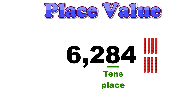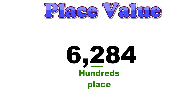In the hundreds place, we see that there is a two. A digit in this spot tells us how many groups of one hundred a number has. Since there is a two in the hundreds place, we know that this number has two groups of a hundred, which is equal to two hundred. This is what two hundred looks like.